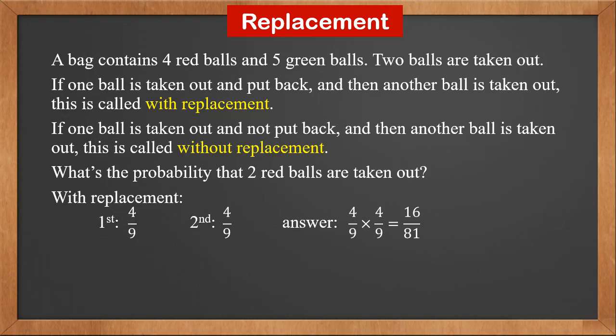Therefore, the answer is four over nine times four over nine, which is 16 over 81.